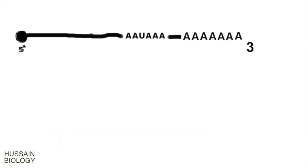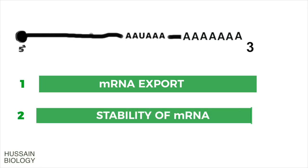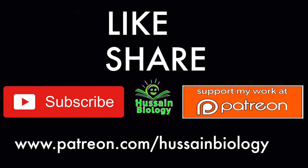This is how the polyadenylation of mRNA is done. Polyadenylation of the 3' end occurs just before the mRNA leaves the nucleus, meaning polyadenylation aids in the export of the mRNA molecule from the nucleus to the cytoplasm. Polyadenylation also maintains the stability of the mRNA molecule. This is how we get the polyadenylation of mRNA during the process of mRNA processing.